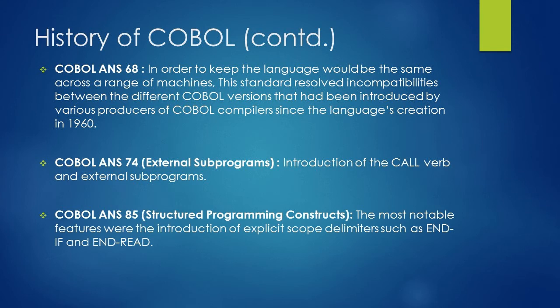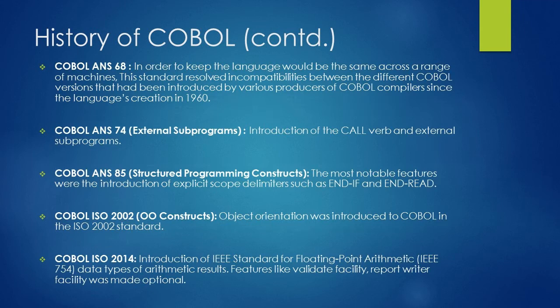The next standard is COBOL ANS-1985. In the 1985 standard, structured programming in COBOL was introduced. The most notable features were the introduction of explicit scope delimiters such as END-IF and END-READ. Prior to this 1985 standard, a full stop was used to delimit scope. The full stop had two problems: one was visibility, and second, it would delimit all open scopes, which was causing many program bugs.